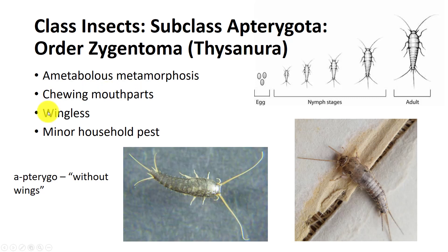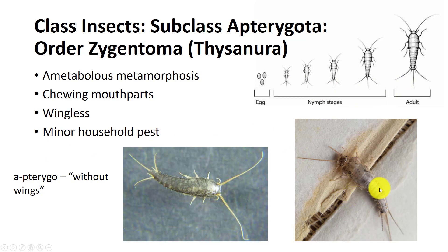Insects in the order Zygentoma include silverfish and firebrats. They are small insects ranging from 7 to 19 mm. They have ametabolous metamorphosis, which means that their nymphs look like the adults and that they are wingless. They have chewing mouthparts and like to munch on old books and paper, especially if there's a moist environment.